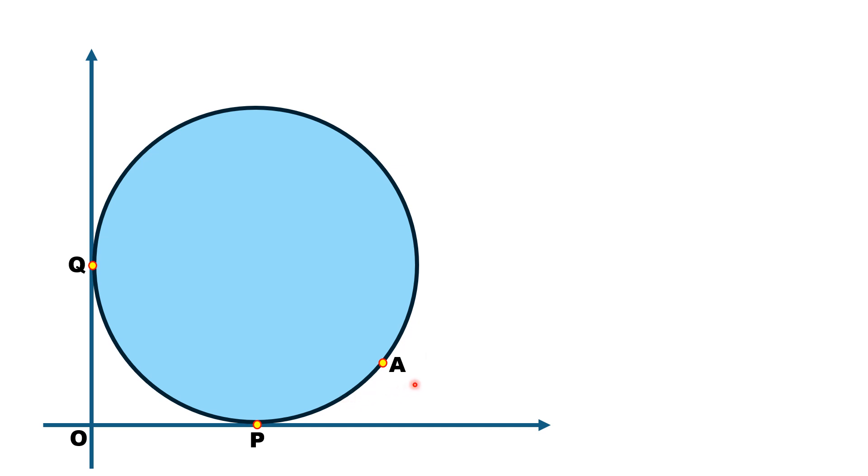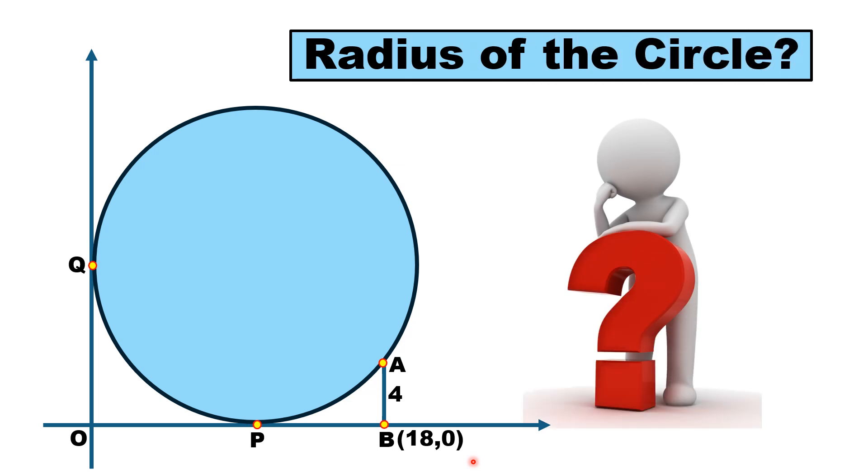If we draw a perpendicular to the x-axis from point A, which meets the x-axis at point B, and the length AB is 4 units, and the coordinates of point B are (18, 0), then with this data we have to find the radius of this circle. Let us move towards the solution.